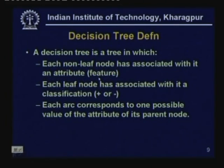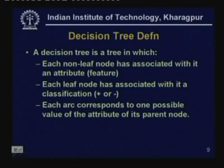Formally, a decision tree is a tree in which each non-leaf node has associated with it an attribute or feature, and each leaf node has associated with it a classification. In a two-class problem the classes can be plus or minus; in general there can be a finite number of classes. Each arc in the decision tree corresponds to one possible value of the attribute of its parent node. The internal nodes are decision nodes where an attribute value is checked, and the branches correspond to the different values the attribute can take.